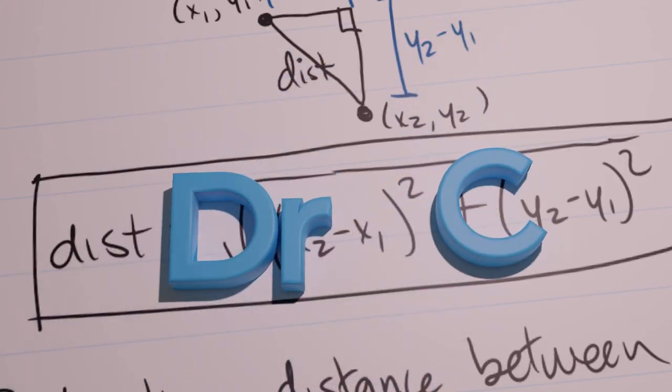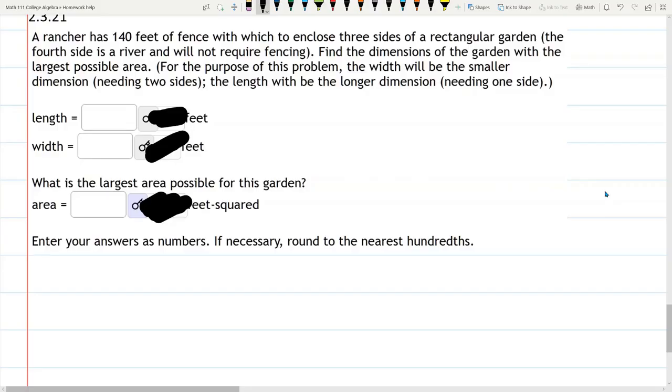In this problem, we're fencing a rectangular garden, but there's only three sides. And we have 140 feet of fence. The fourth side is a river and does not require fencing. We want to maximize the area.